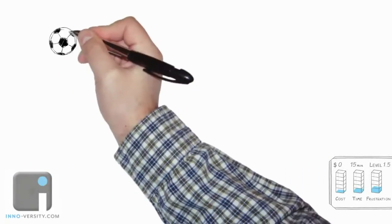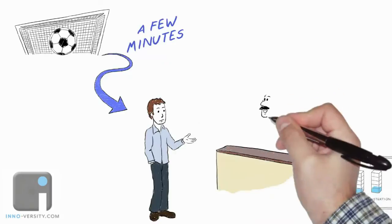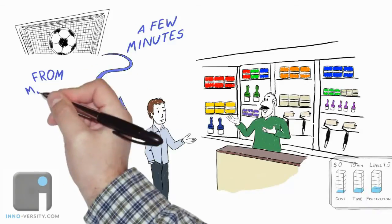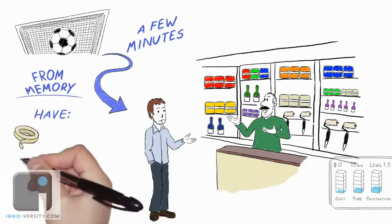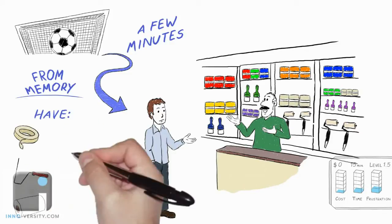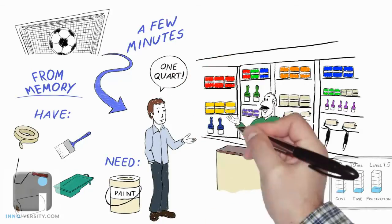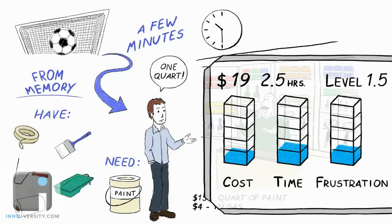After the soccer game is done, Steve figures he'll save some time. The paint store is only a few minutes from the soccer field. He doesn't really remember what he has in the paint closet and doesn't have time to check, so he decides to go from memory. He's pretty sure he has tape, probably has a roller handle, a roller head, seems like he has a cutting brush and a pan. He probably just needs paint. One quart should do it. It's now ten thirty. His cost is fifteen bucks for a quart of paint, four dollars in gas. He's got about two and a half hours into this, and his frustration level is still at about a one point five.